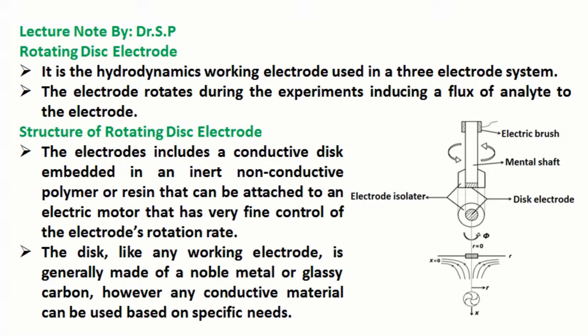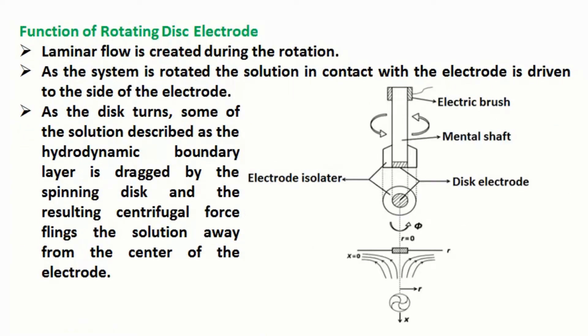Structure of Rotating Disc Electrode: The electrode includes a conductive disc embedded in an inert non-conductive polymer or resin that can be attached to an electric motor that has very fine control of the electrode's rotation rate. The disc, like any working electrode, is generally made of a noble metal or glassy carbon, however any conductive material can be used based on specific needs.